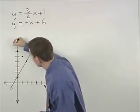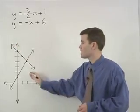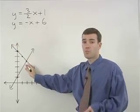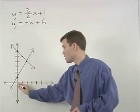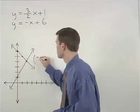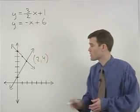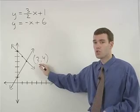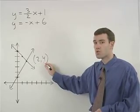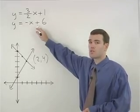So if we graph our second line, you can see that the two lines intersect at this point, which has the coordinates 2, 4. In other words, when x equals 2 and y equals 4, we have the solution for our system of equations.